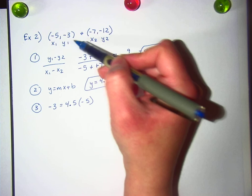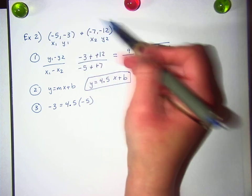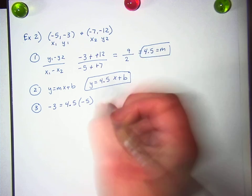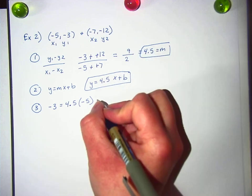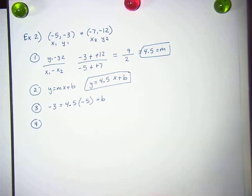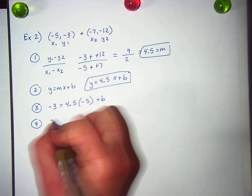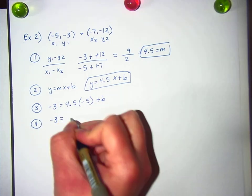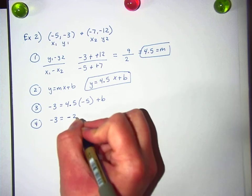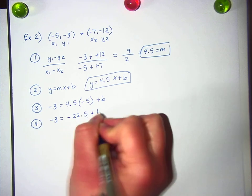Again, I use the x and the y only from this point, not from this one. You pick one point and you stick with it. You can't go back and forth. Plus b. And then for step 4, I've got to solve for it. So let's see, negative 3 equals 4.5 times 5 is negative 22 and a half plus b.